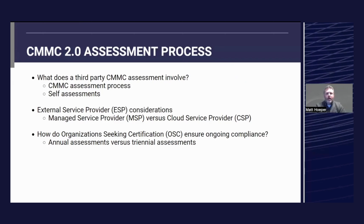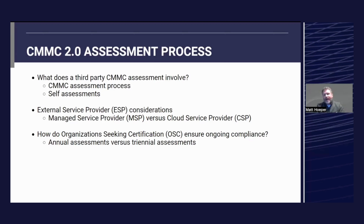I'm going to give an overview of what the process would look like for an OSC — an organization seeking certification. The very first thing you're going to want to do is identify what level you need to be at. As Payam mentioned, if you're in possession of only FCI, that would put you at Level 1, which is self-attestation. If you're in possession of CUI, that puts you at at least Level 2, where you would need a C3PAO — a CMMC third-party assessment organization — come out and assess you. The question always comes up: am I in possession of CUI? I would always push back to the contract — figure out what the contract states, and if you have any questions, reach out to your Contracting Officer.